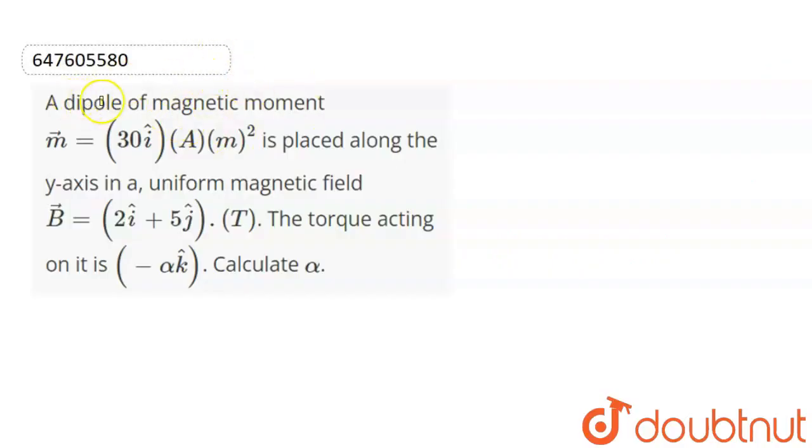Next question is: a dipole of magnetic moment M equals 30i ampere meter square is placed along the y-axis in a uniform magnetic field B vector equals 2i plus 5j Tesla. The torque acting on it is minus alpha k cap. Calculate alpha.